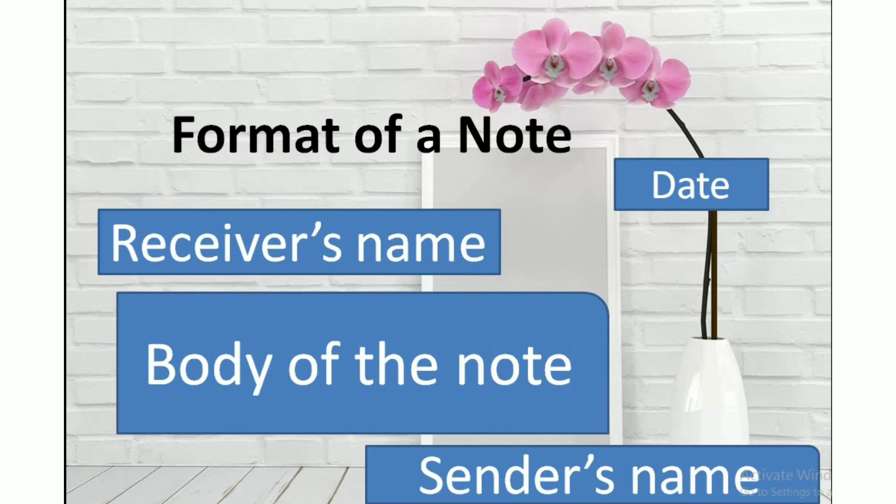The first element is the date. Next is the receiver's name.